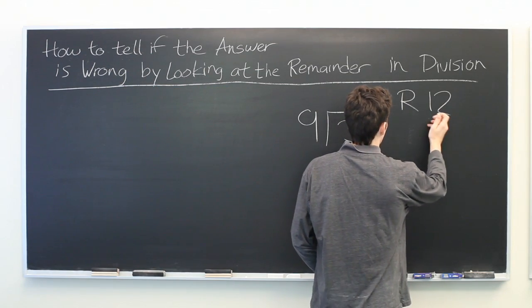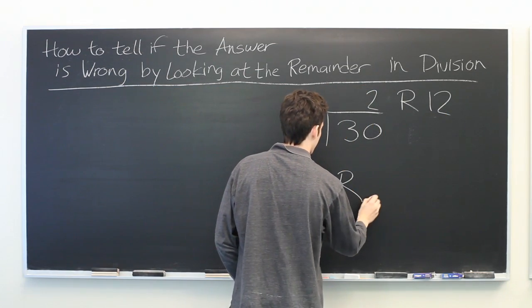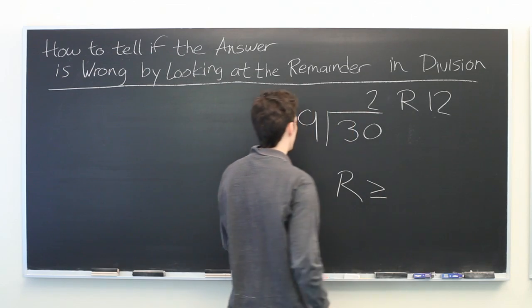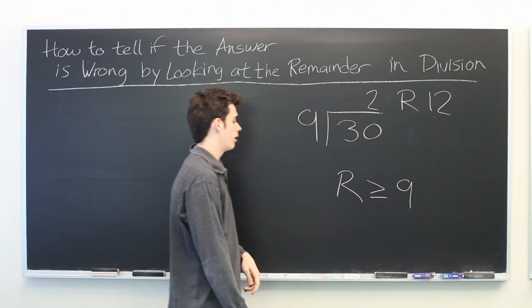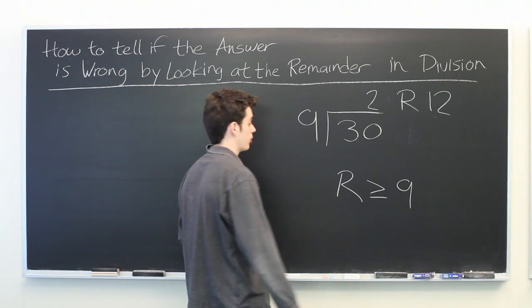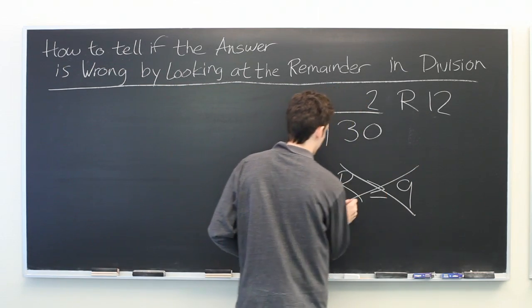If your remainder is greater than or equal to this number here, in this case 9, that means you've done something wrong. That should never be the case.